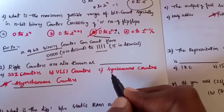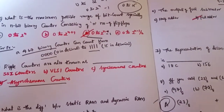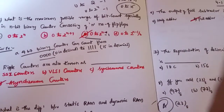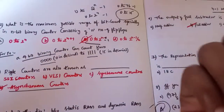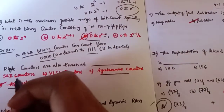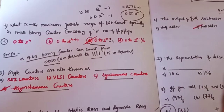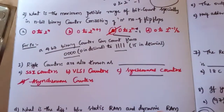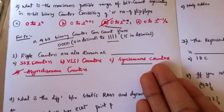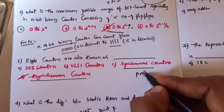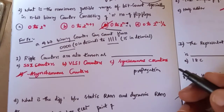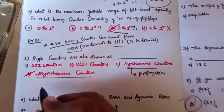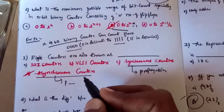When we use a synchronous counter, every flip-flop uses the same clock signal. The same clock signal is applied to every flip-flop. In an asynchronous counter, you need to account for propagation delay, as the clock signal changes through each flip-flop stage.